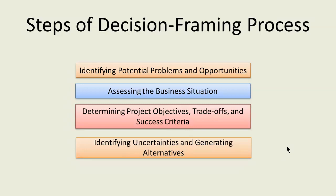Step four is to identify uncertainties and generate alternatives. Pooh needed to be removed one way or the other. Therefore, project scope was a constraint. There were, however, different project alternatives — different ways to extract Pooh.